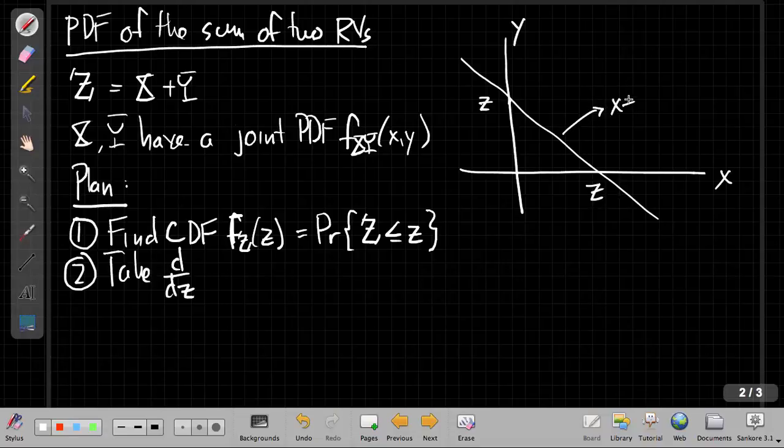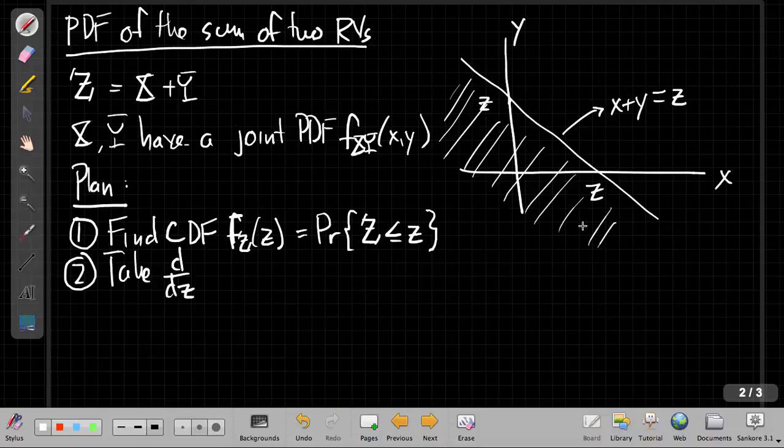The event we're interested in, Z less than z, is this region over here. This shaded region we might call D_z is the event space for that. We intercept both at when y is 0, x is z, and when x is 0, y is z. So what's the probability that we're in this region? We would get that by integrating the joint PDF over this region and then taking the derivative of that.